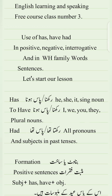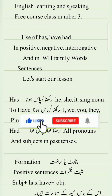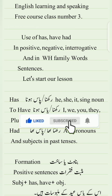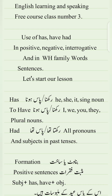To have — pass hona ya rakhna — 'has' is used with singular nouns (he, she, it). To have — pass hona ya rakhna — 'have' is used with I, we, you, they, and plural nouns — jamaa jo naam hoti hain ke saath ishtamal kiya jata hai.